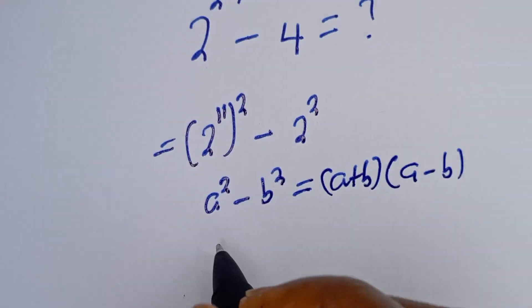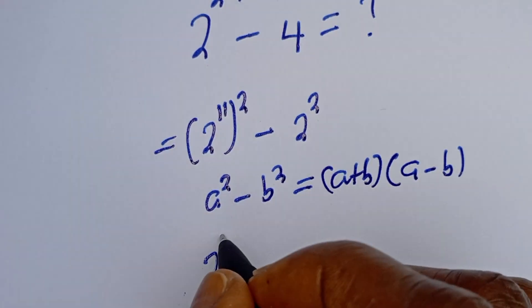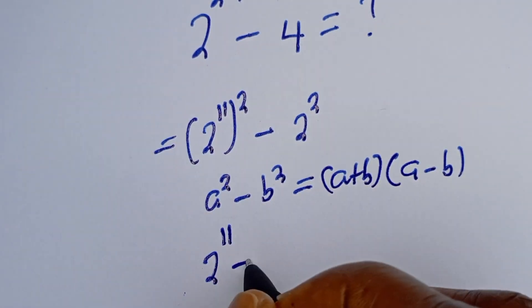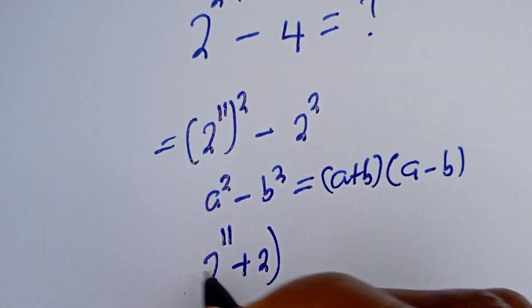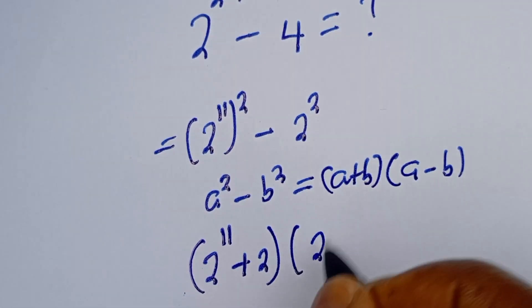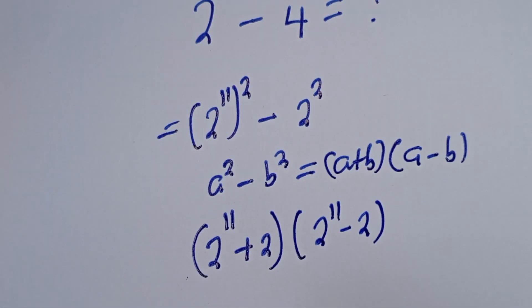Then this can be written as 2 raised to power 11 plus 2 bracket 2 raised to power 11 minus 2.